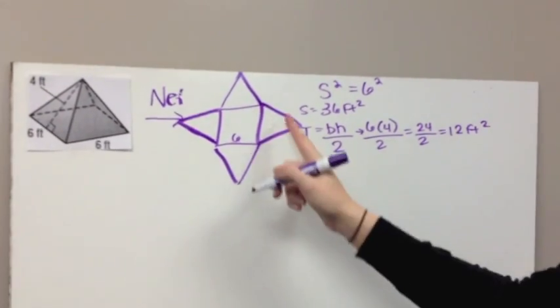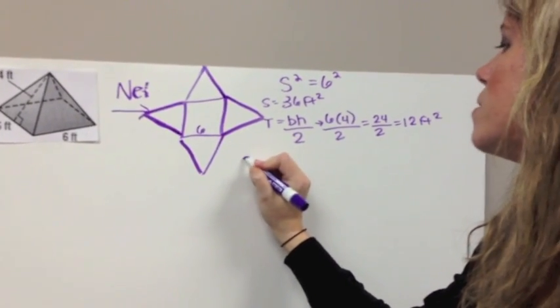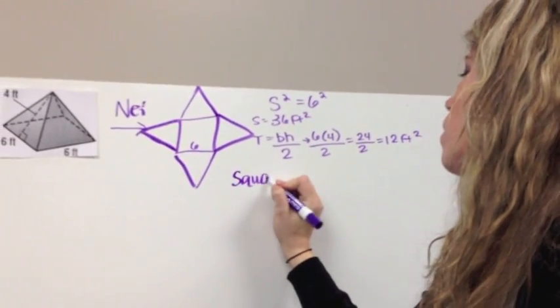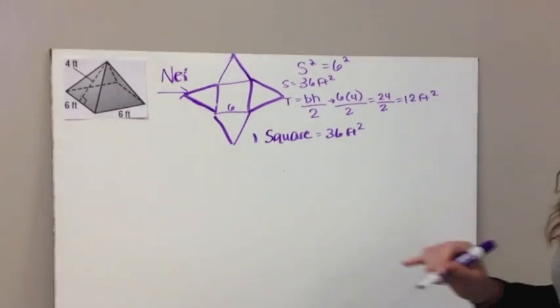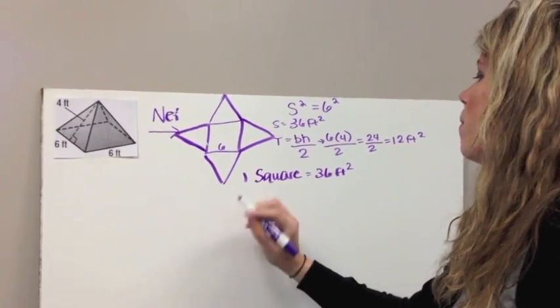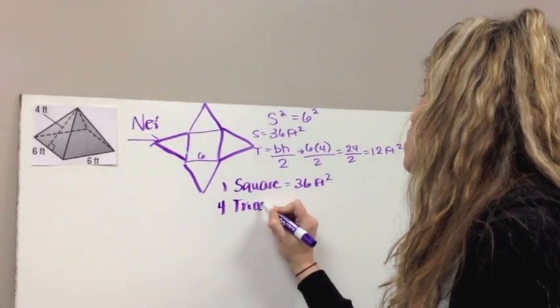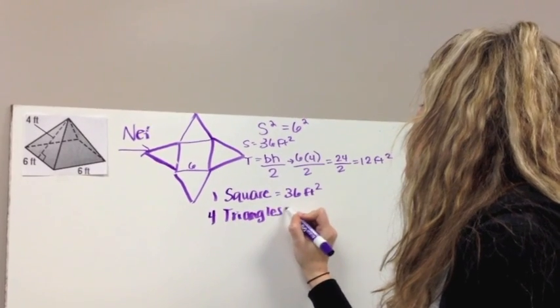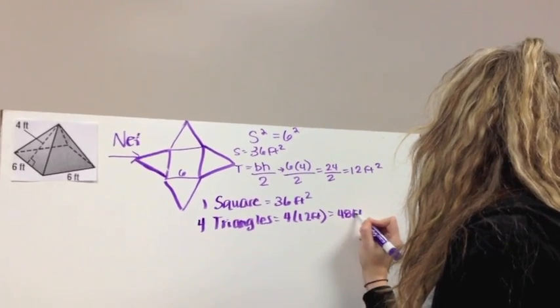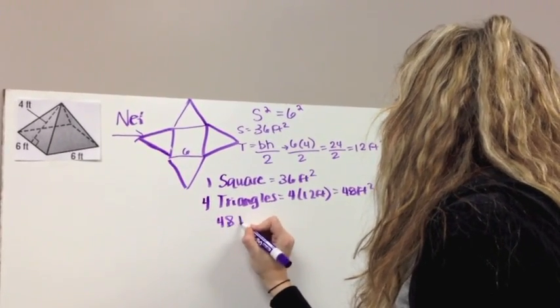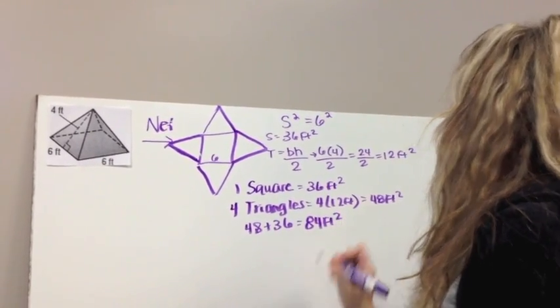Then we have our triangle, and our formula is base times the height divided by 2. So we have 6 times 4 divided by 2, which gives us 24 divided by 2, which gives us 12 feet squared. Then we need to think about how many triangles do we have here. We have 4, so we're going to add them together now, the square, which was 36 feet.